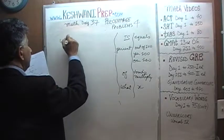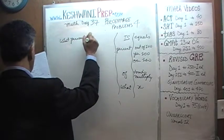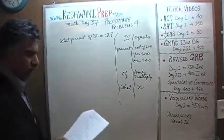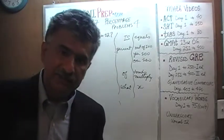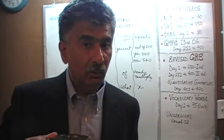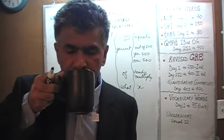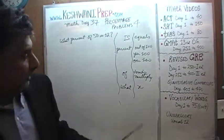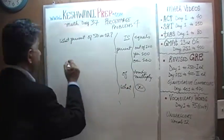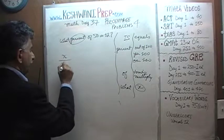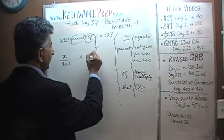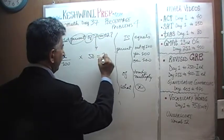Number 3: What percent of 50 is 12? Let's get our equation out of it. We translate one word at a time using our translation guide. 'What' is our unknown. 'Percent' means out of 100, so it's x over 100. 'Of' means times. Then we have 50. 'Is' means equals, and 12.